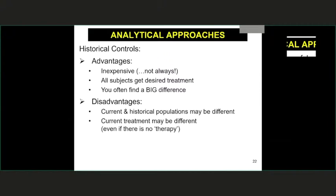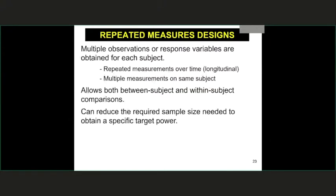You really have to make a strong case that you have solid evidence of historical control data and that it should be representative of a placebo group before it would be accepted to use historical controls in clinical trials.